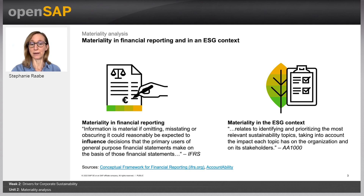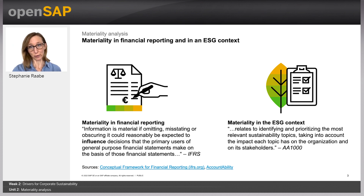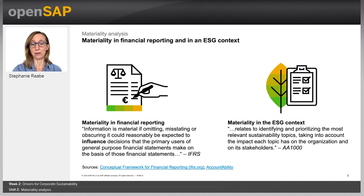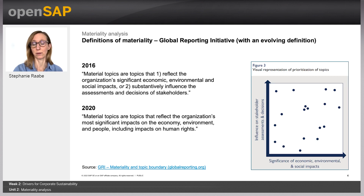Depending on the sector and the activities that a company conducts, the risk varies. For example, a software company like SAP has a very different set of material topics than a company in the retailing sector. Let's come to a definition of materiality that is widely used in sustainability reporting today — the definition provided by the GRI standards.